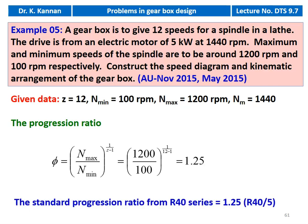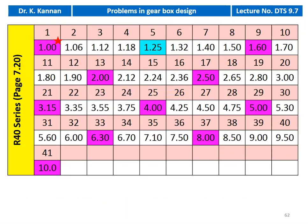The standard progression ratio from the R40 series — 1.25 is available, so this is R40 by 5. From the R40 series numbers on page 7.20 of the PSG design data book, 1.25 is highlighted. This is R40 by 5. We have to take 12 different speeds starting from 100.